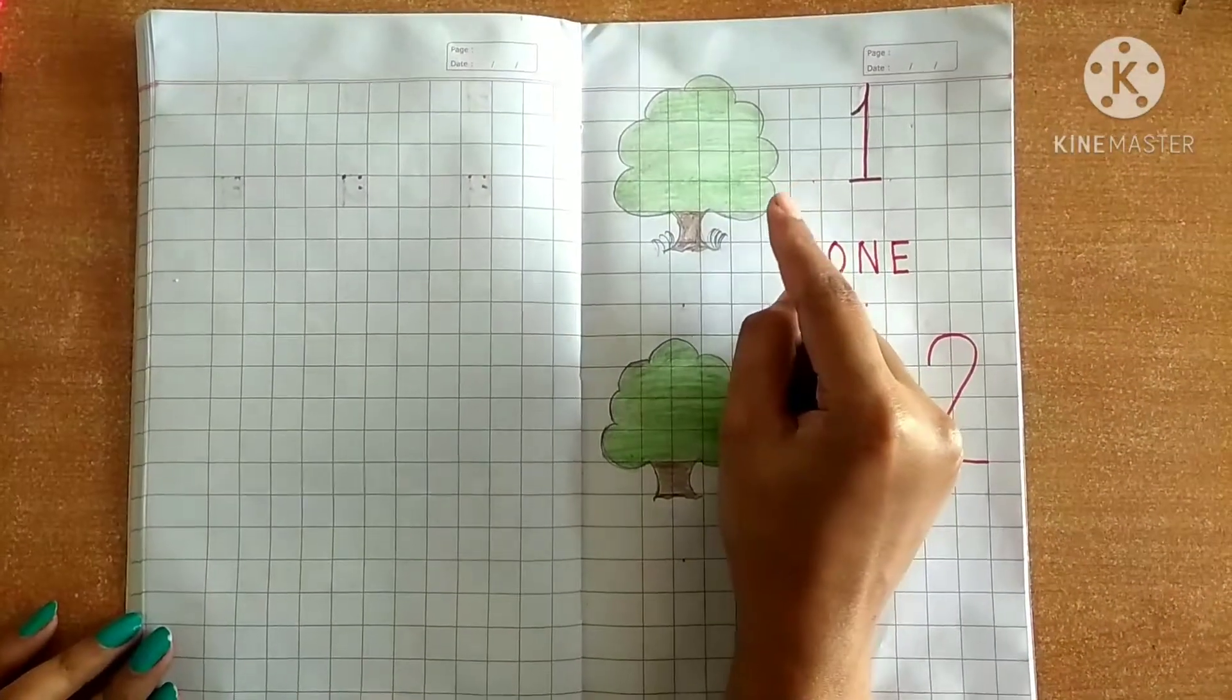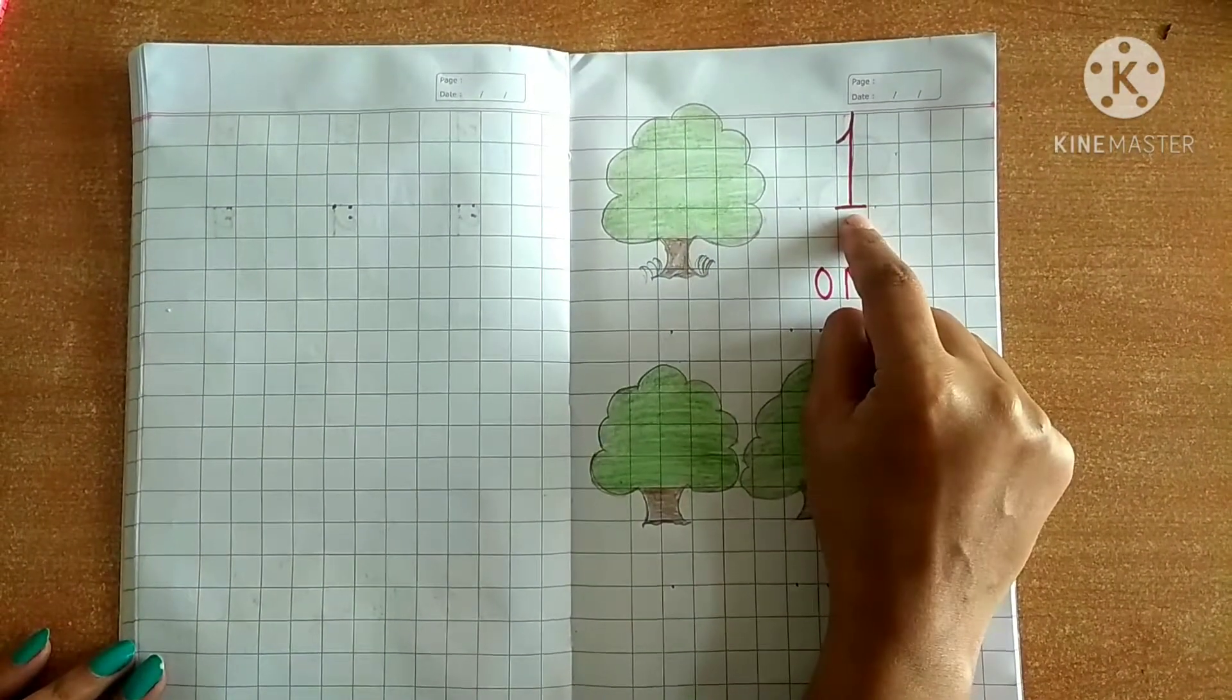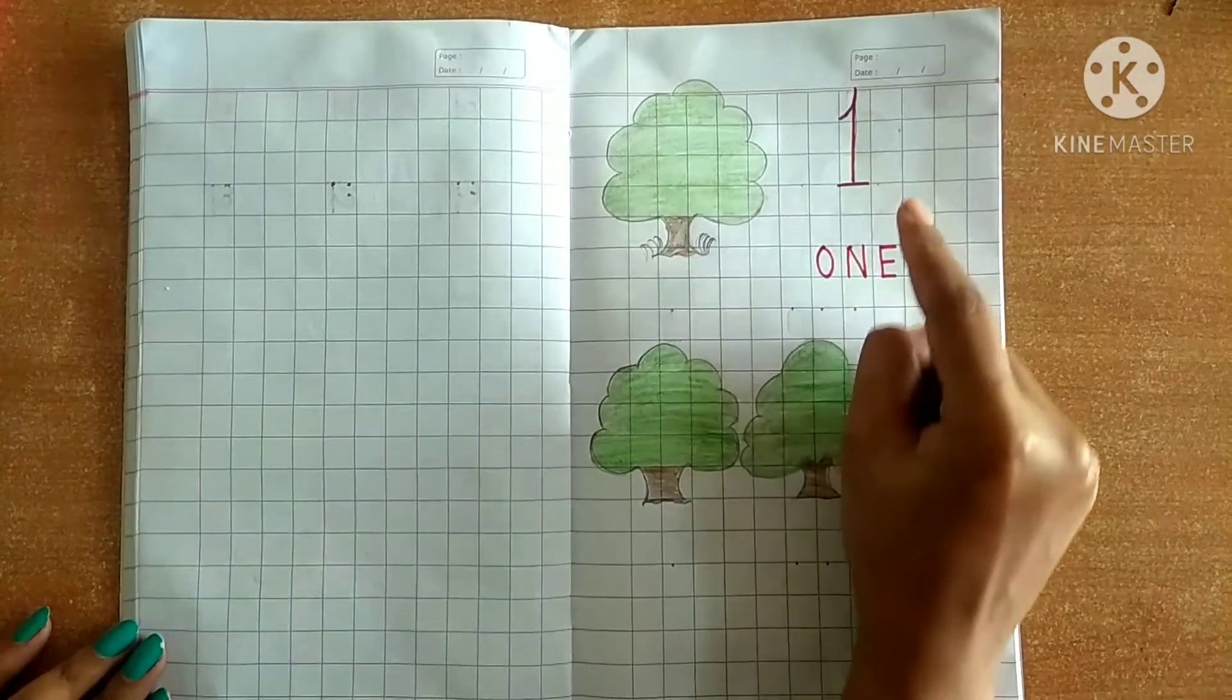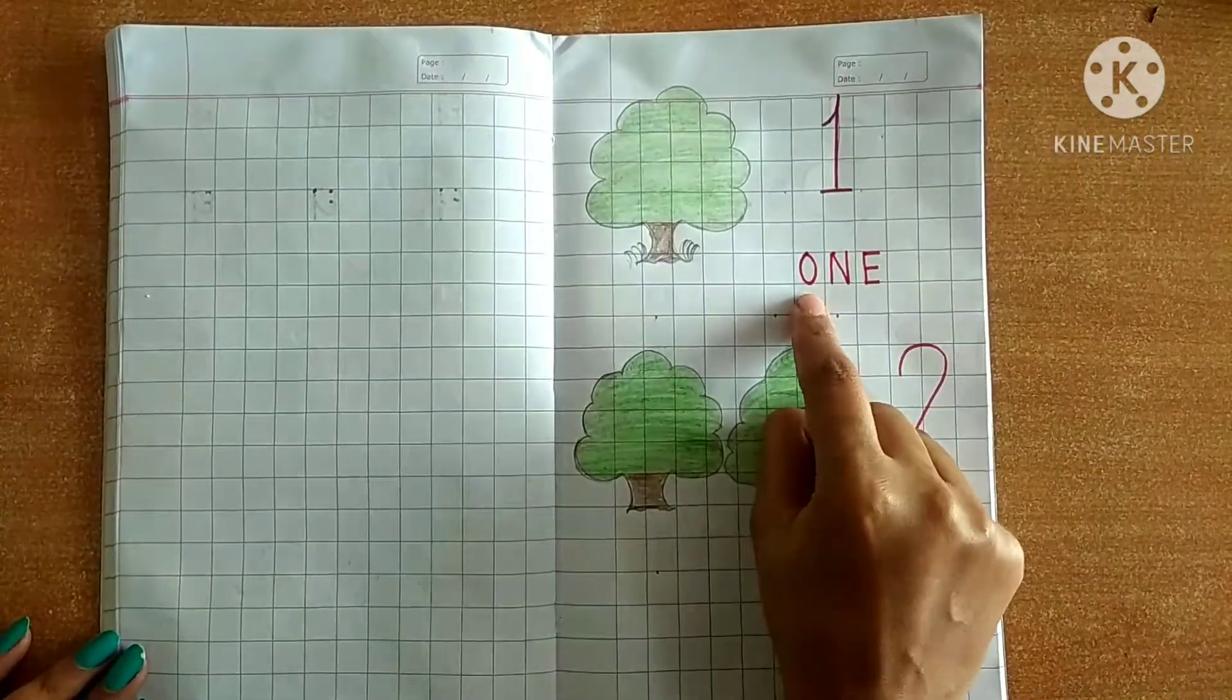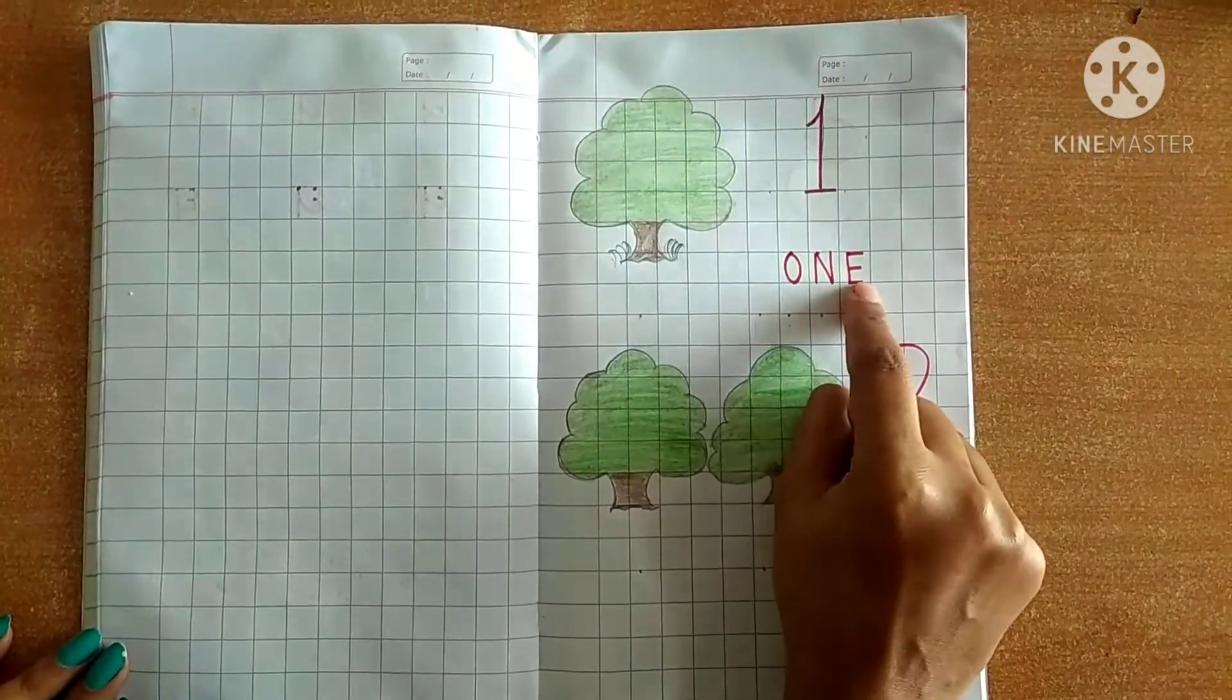As you can see here, this is one tree and this is one number. Okay student, now I will teach you its name. Now start O-N-E-1.